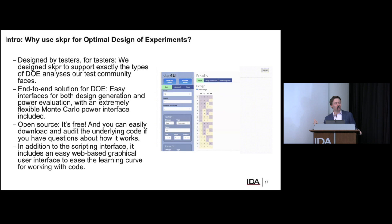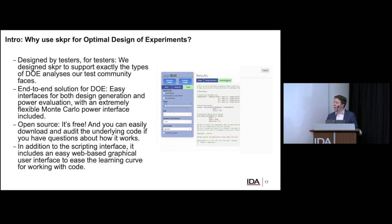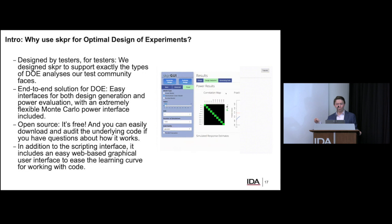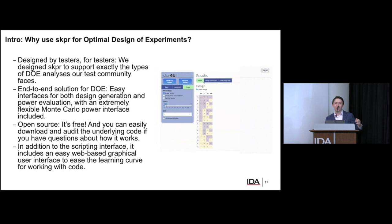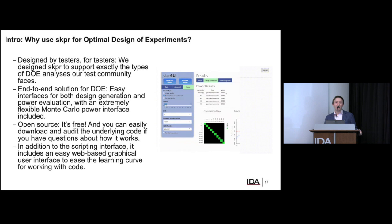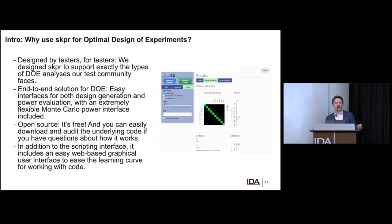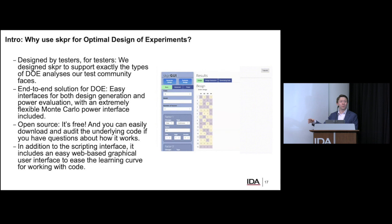Why do we want to use Skipper for optimal design experiments when we have lots of other software like JMP? First, Skipper was really designed by testers for testers — by people doing the exact kind of workflows in the test community to solve those hard questions. We don't have extra features to support randomized control trials for pharmaceutical companies or other clients. Skipper was designed to do the DOE work we often face in the DoD and related communities for test and evaluation. All the features support that workflow, with very few extraneous features to get confused about.